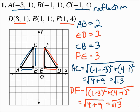All three pairs of sides are congruent, which means we have Side-Side-Side. Therefore the triangles are congruent — this was a congruence transformation. To do a congruence transformation verification, use the distance formula for any diagonal sides and just count the distance for horizontal or vertical sides. Once you have shown that all three pairs of sides are the same, then you're finished.